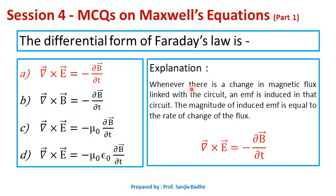Maxwell wrote his third equation for Faraday's law. Faraday's law states that whenever there is a change in magnetic flux linked with a circuit, an EMF is induced in that circuit, and the magnitude of the induced EMF equals the rate of change of flux. This Maxwell's third equation is written as curl of E bar equals minus del B bar by del t. Therefore, option A is the correct option.